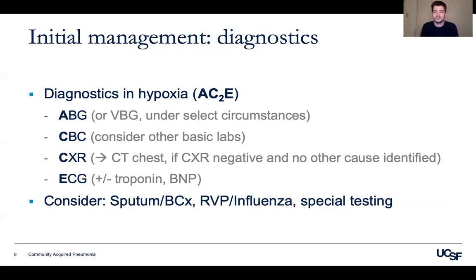Additionally, consider sputum and blood cultures, viral panels, and special testing such as COVID-19. Sputum cultures are only useful if collected in a high-quality manner and delivered to the lab promptly. They play a big role in de-escalation of antibiotics when pseudomonas or MRSA is suspected. For blood cultures, the yield in pneumonia is generally low — less than 10% — but they're helpful particularly in patients presenting with features of sepsis.